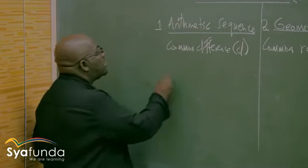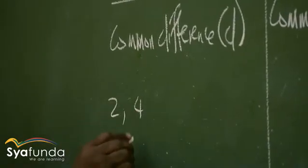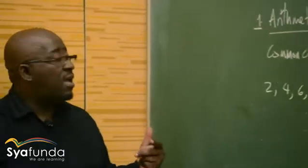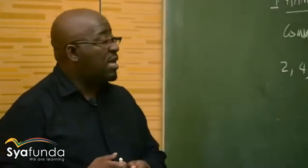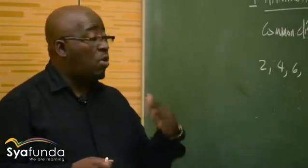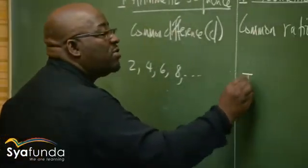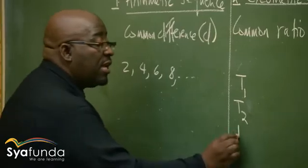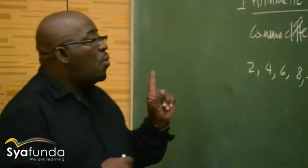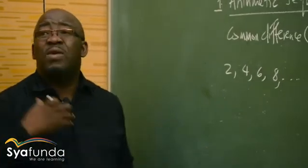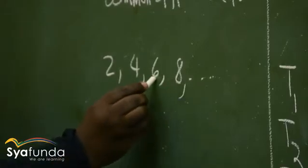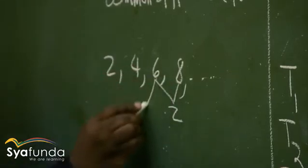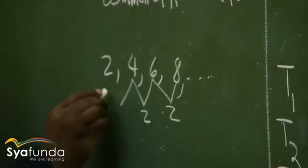For example, if we have the sequence 2, 4, 6, 8, and so on, the first term is 2, the second term is 4, and the third term is 6. What is the common difference? Difference comes from subtraction. When we say 8 minus 6, the answer is 2. And 6 minus 4 is also 2, and 4 minus 2 is also 2.